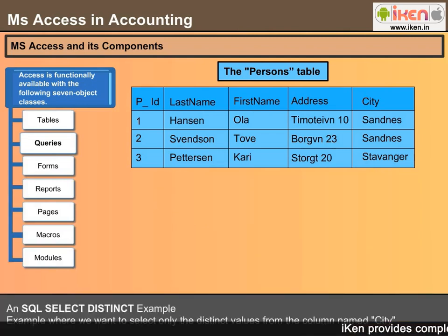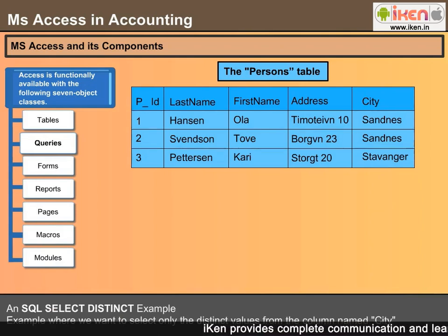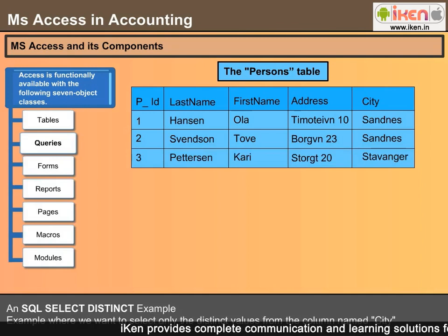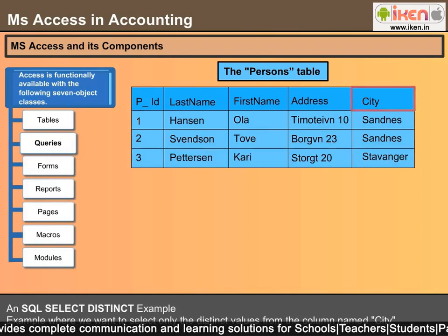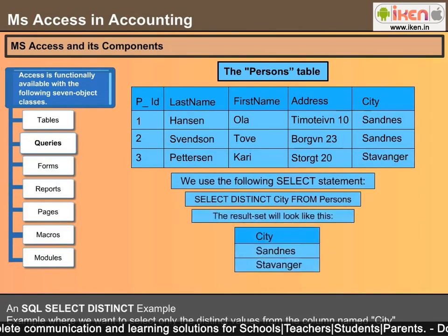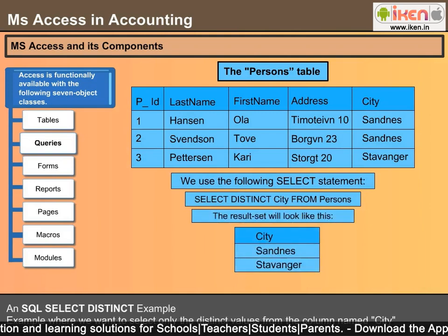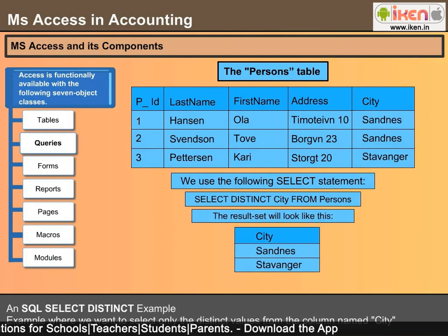Here is an SQL SELECT DISTINCT example, where we want to select only the distinct values from the column named City from the table below. We use the following SELECT statement and the result set will look like this.